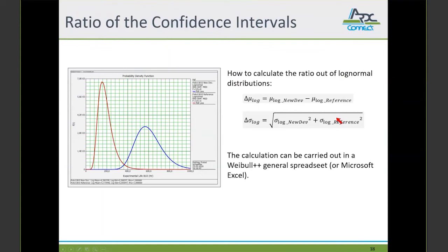To calculate a B10 life increase with a certain confidence, this tool is also not very helpful. We have to do it a little bit different. To calculate the ratio of two log-normal distributions, we can proceed as follows. The Δμ_log is the difference of the two μ_log values. So μ_log new development minus μ_log reference. And the Δσ is the square root of the sum of the variances. So square root of σ_log new development squared plus σ_log reference squared.